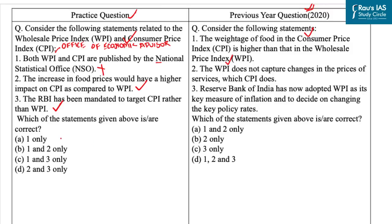With this, our correct answer is option D, that is two and three only. If you can eliminate the first statement, then you can easily find the right answer. The answer of this PYQ is option A, that is one and two only.